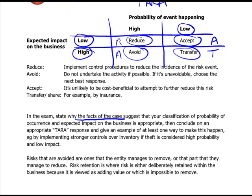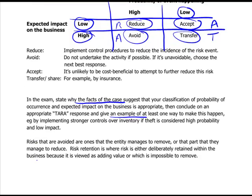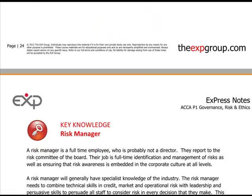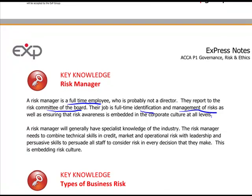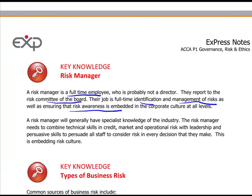It's important to state the facts of the case and apply the theory to situations — read the scenario, apply it, and give an example. Risks that are avoided or reduced are ones the entity wants to remove or manage. A risk manager is essentially a full-time employee, probably not a director, who reports to the audit committee. They need to identify and manage risk, and ensure that risk awareness is embedded in the corporate culture at all levels.